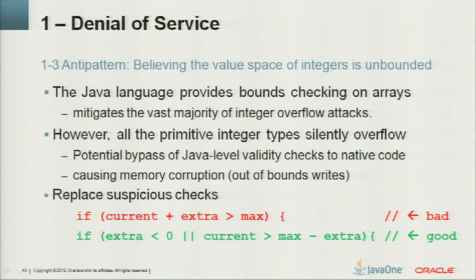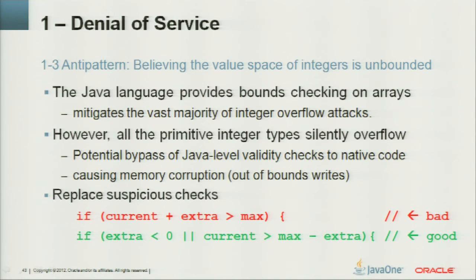The Java language provides bounds checking on arrays, which mitigates the vast majority of integer overflow attacks. However, primitive types — char, byte, long, int — silently overflow, which can allow bypass of Java-level validity checks passed to native code. Once those checks are bypassed, you could cause memory corruption, out-of-bounds writes, and possibly a JVM crash. To protect native code, replace the suspicious addition check with a subtraction construct that has the same effect but uses more of the integer value range.